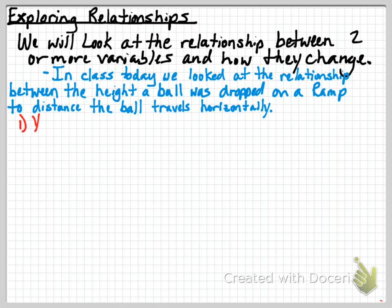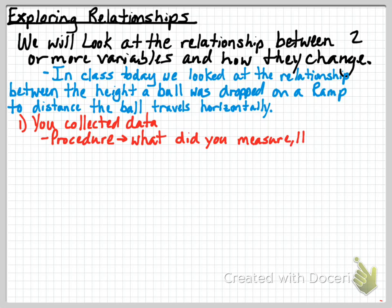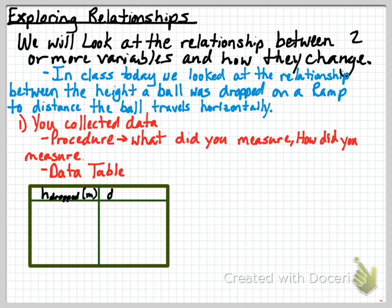The first thing you do in exploring relationships is to understand that those happen between two objects and how they change. And we collect data. How you do that is you have a procedure you follow. During that procedure, you're wondering what you did, what you're trying to measure, and then how you measured it. So it's important that your data table follows certain things. Here I have a sample data table and then with sample data in that data table.